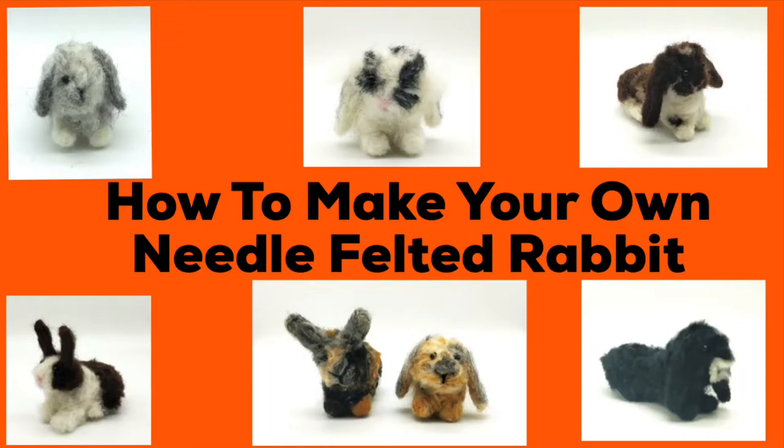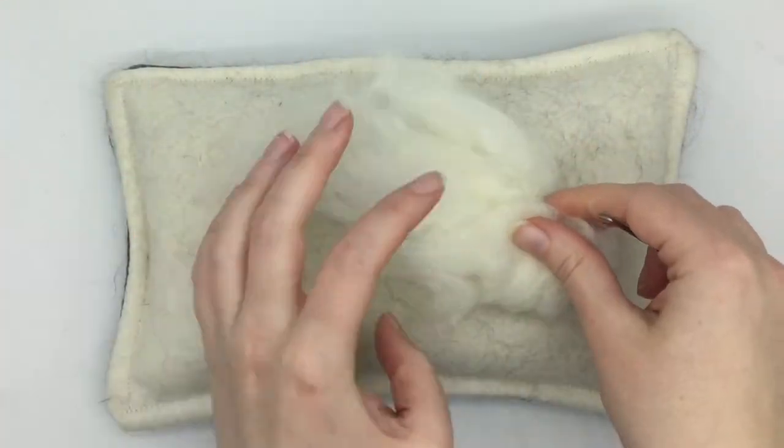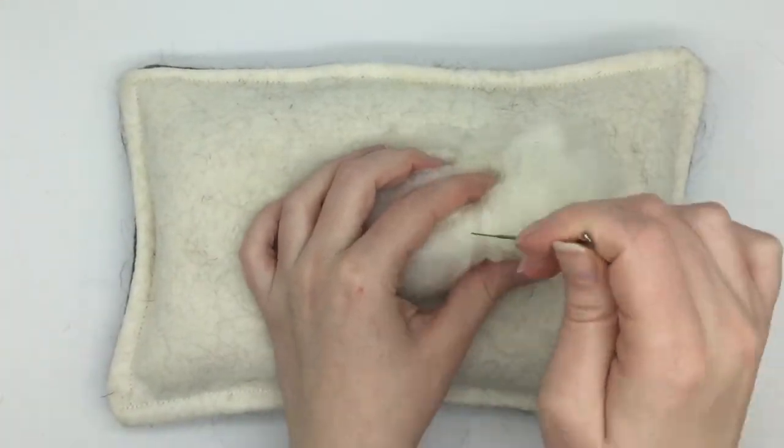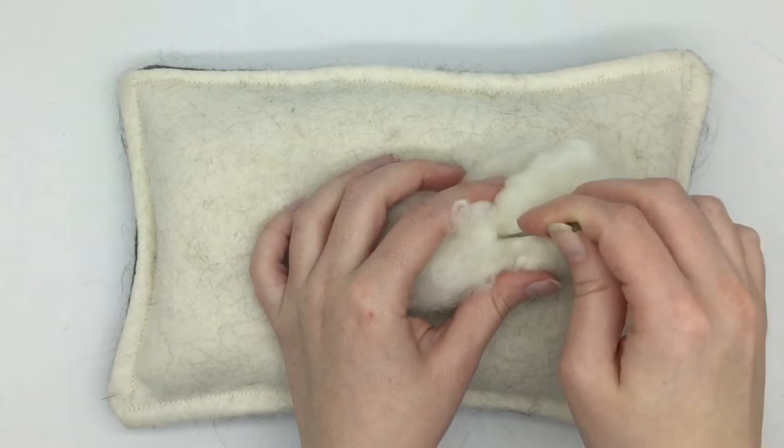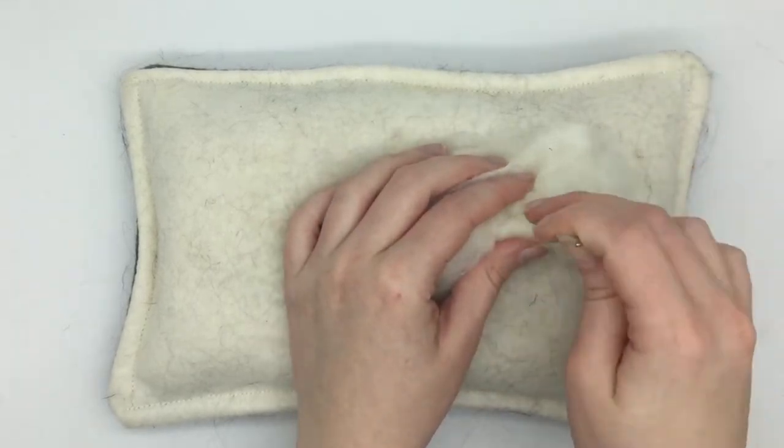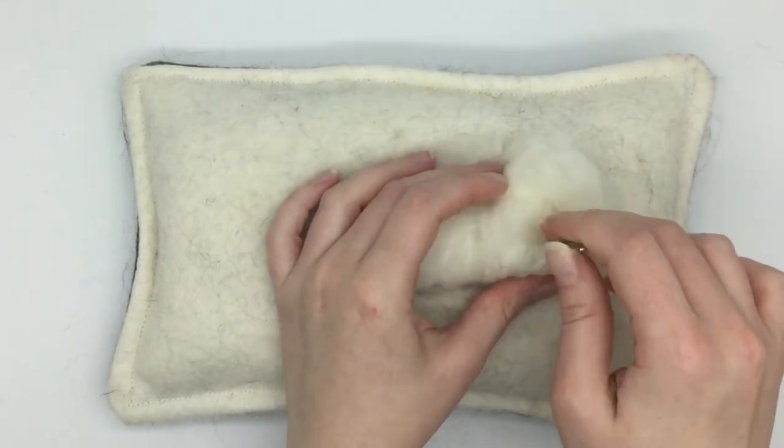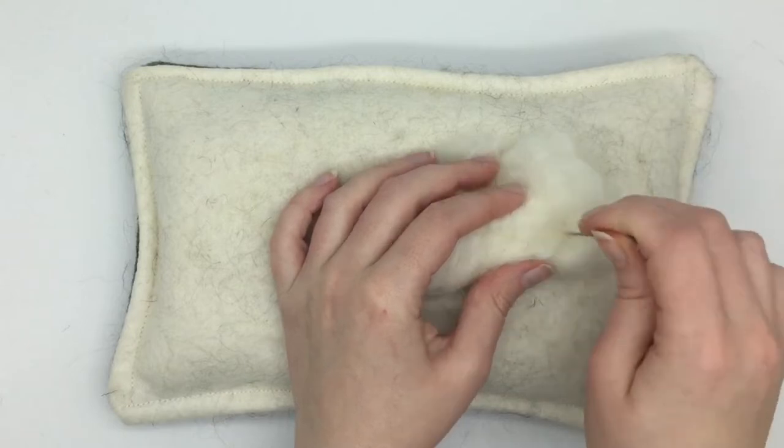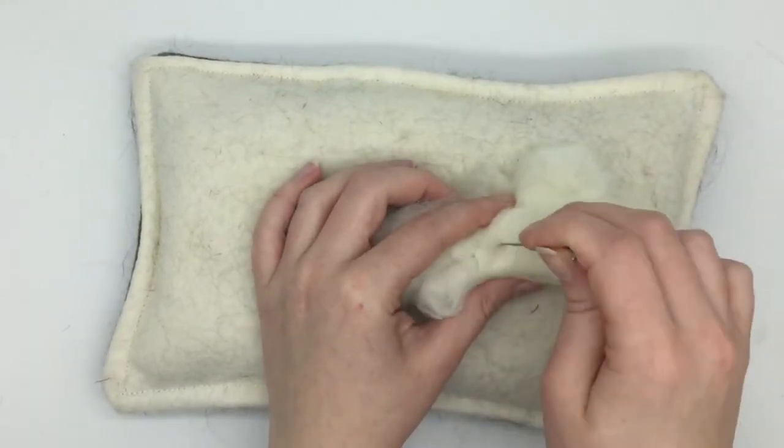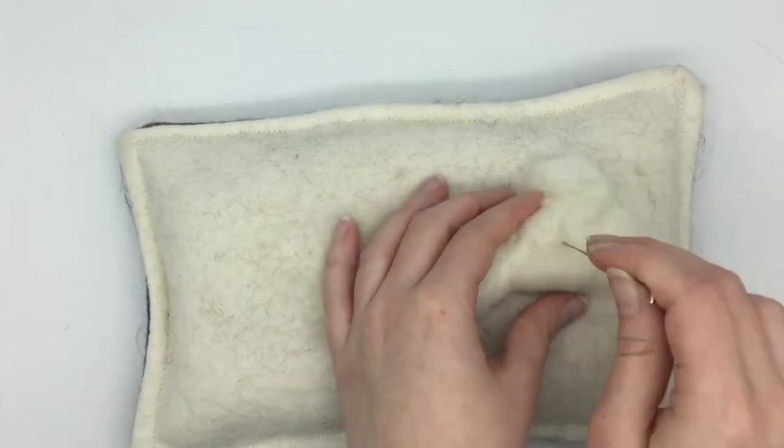Today I'm going to be showing you how to make a felted rabbit. I'm making a custom made felted rabbit today, and to start off with I'm going to get some of my core wool and I'm going to felt this into an oblong shape. This is to make the body of the rabbit.